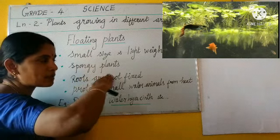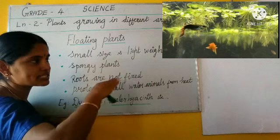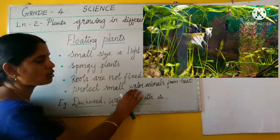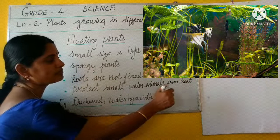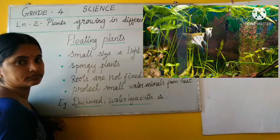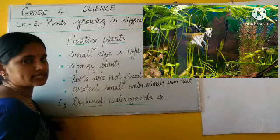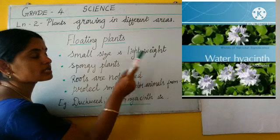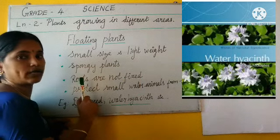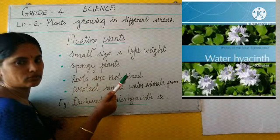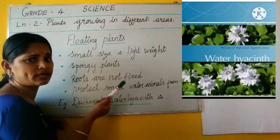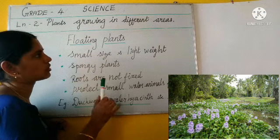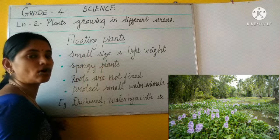These plants cover the water surface area and protect small water animals from the heat of the sun. Examples of floating plants are duckweed and water hyacinth. If water hyacinth is more in number it can be dangerous, but if it is fewer in number it is good for water animals.